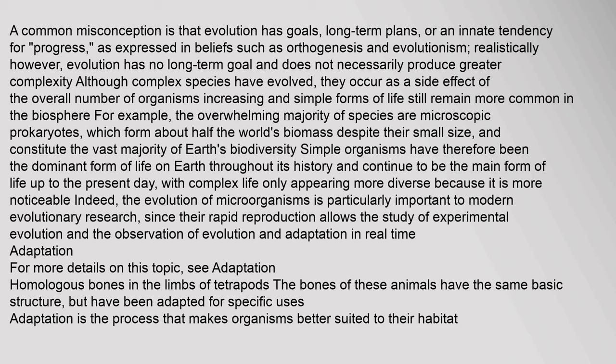Although complex species have evolved, they occur as a side effect of the overall number of organisms increasing, and simple forms of life still remain more common in the biosphere. For example, the overwhelming majority of species are microscopic prokaryotes, which form about half the world's biomass despite their small size, and constitute the vast majority of Earth's biodiversity. Simple organisms have been the dominant form of life on Earth throughout its history. The evolution of microorganisms is particularly important to modern evolutionary research, since their rapid reproduction allows the study of experimental evolution and the observation of evolution and adaptation in real time.